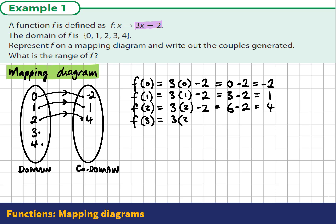Input 3, we get 3 times 3 minus 2, which is 9 minus 2, which is equal to 7.